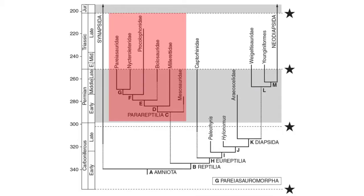The next group of anapsid reptiles are the Parareptilia, which is a monophyletic clade of anapsid-like reptiles that are believed to be more distantly related to modern reptiles. The Parareptilia is a hodgepodge of early reptiles that lived during the Permian period between 300 and 250 million years ago, with many going extinct at the Permian-Triassic boundary.